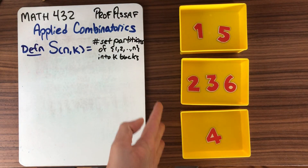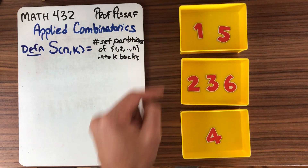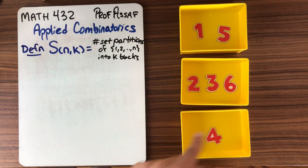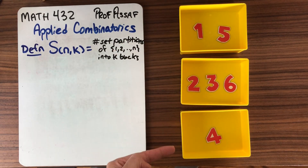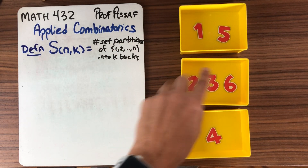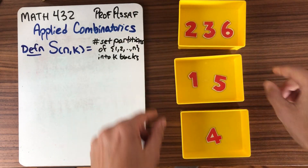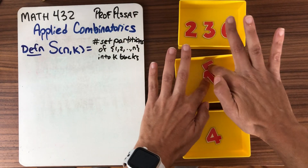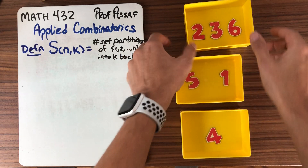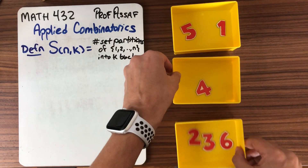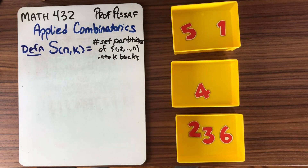Over here we have an example of a set partition of 6 — the numbers 1 to 6 — into 3 blocks. It doesn't matter the order in which the blocks come, and it doesn't matter the order of the numbers within the blocks. We just think of these however they are. So these are the set partitions.